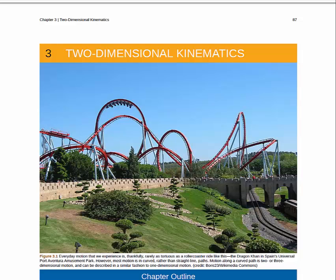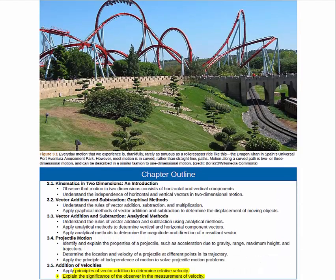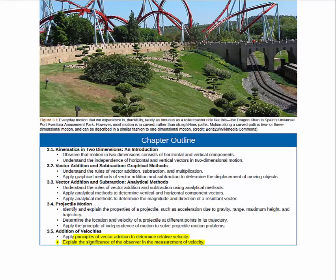Hello, and welcome to the Chapter 3 Video Reading Guide for the OpenStax Textbook for Physics 131. This chapter, which begins on page 87 of the PDF, covers two-dimensional kinematics. In particular, we will be spending quite a bit of time talking about vectors.